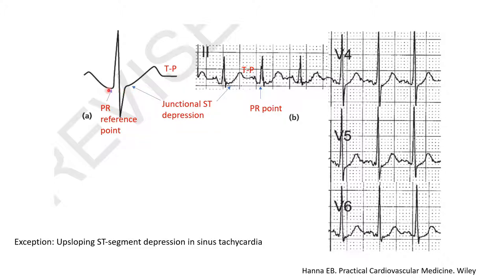Referencing the J point to the PR segment, rather than the TP segment, mitigates the effect of atrial repolarization on the ST segment, as both are affected by atrial repolarization — referencing to PR neutralizes its effect. If you reference to the TP instead, you will end up with a fake ST segment depression purely driven by atrial repolarization. In this example, you have PR depression and junctional upsloping ST segment depression — don't reference to the TP; reference to that PR point.